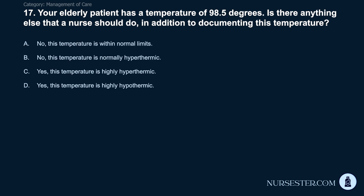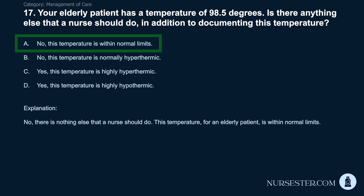Question 17: Your elderly patient has a temperature of 98.5 degrees. Is there anything else a nurse should do in addition to documenting this temperature? A) No, this temperature is within normal limits. B) No, this temperature is normally hyperthermic. C) Yes, this temperature is highly hyperthermic. D) Yes, this temperature is highly hypothermic. Correct answer: A. No, this temperature is within normal limits. For an elderly patient, 98.5 degrees is within normal limits, and there is nothing else the nurse should do.